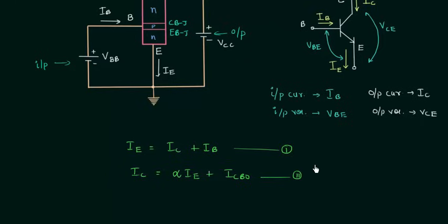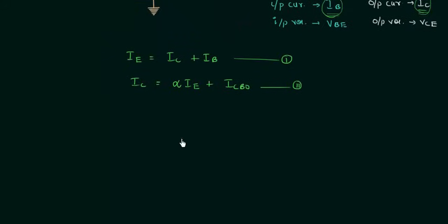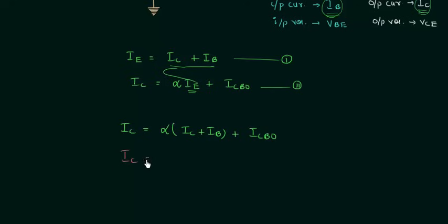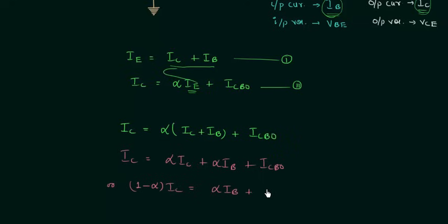Now I am interested to find out how the output current IC varies as a function of input current IB. Using these two equations, we can write IC equal to alpha times (IC plus IB) plus ICBO, since IE is equal to IC plus IB.